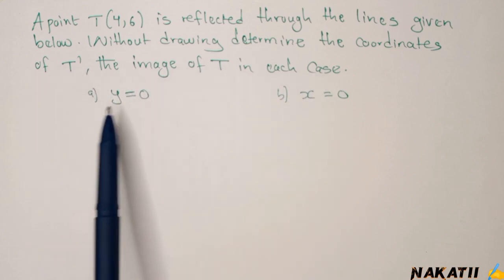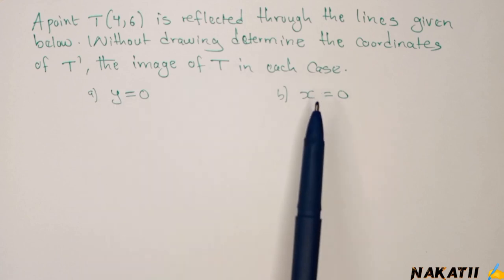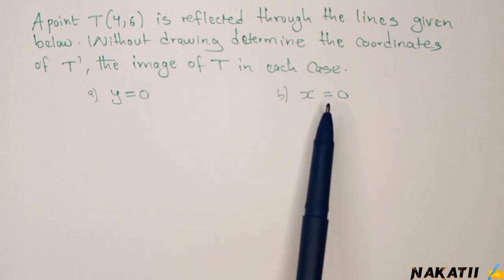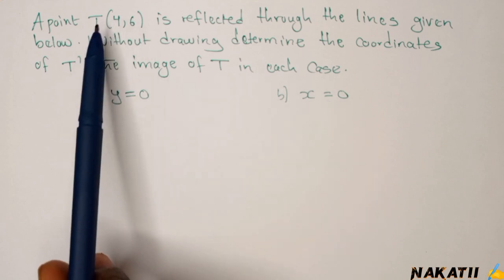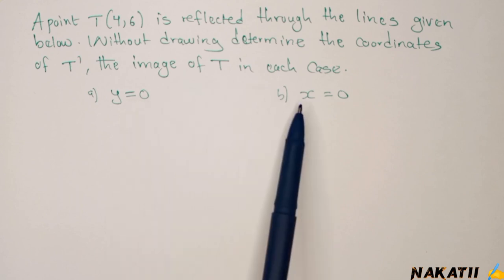Now line y equals 0 is simply the x-axis, and line x equals 0 is simply the y-axis. So we're supposed to reflect this point on the x-axis and again on the y-axis.